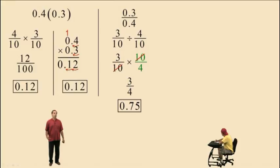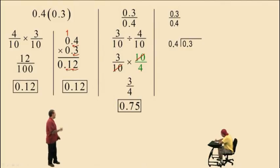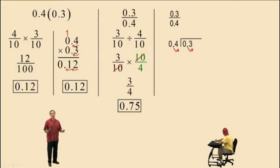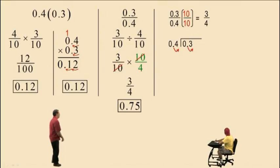Now let's perform the division problem using the long division technique. Don't get scared. Here we have three tenths divided by four tenths. We're going to divide four tenths into three tenths. You're told to make that outside number a whole number — the four tenths — by moving decimals. So if you move the decimal once on the outside, you must move the decimal point one time on the inside. What you're actually doing is multiplying both those numbers by ten. We have three tenths over four tenths — if we multiply both numerator and denominator by ten, we get three-fourths, which means three divided by four. So three tenths divided by four tenths is equivalent to the calculation three divided by four.